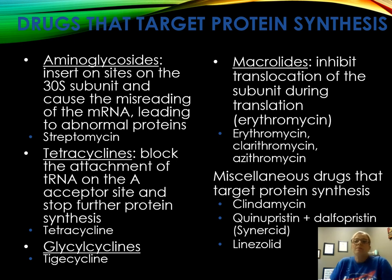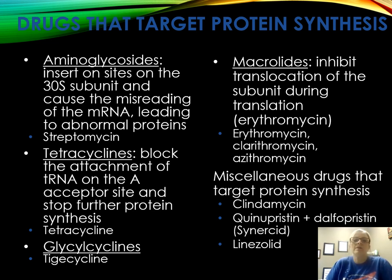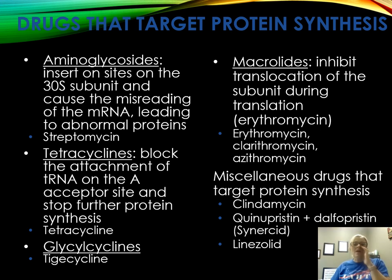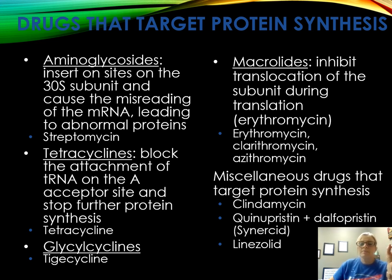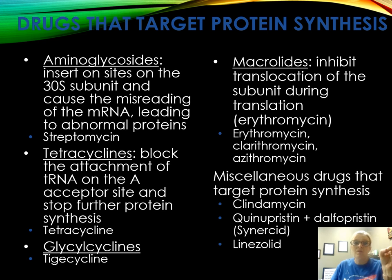Drugs that target protein synthesis include aminoglycosides and tetracyclines. Common examples: tetracycline works against gram-positive, gram-negative, aerobic, and anaerobic species; streptomycin is broad spectrum; clindamycin, erythromycin, and azithromycin all inhibit protein synthesis. Azithromycin — the common Z-Pak — is broad spectrum and good for ear, respiratory, and skin infections, and is also important for AIDS patients dealing with Mycobacterium.